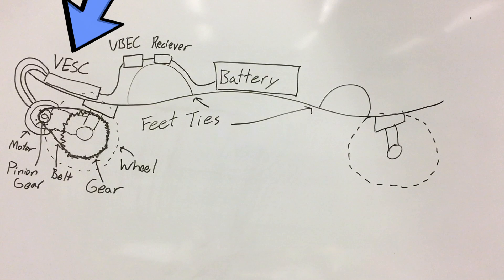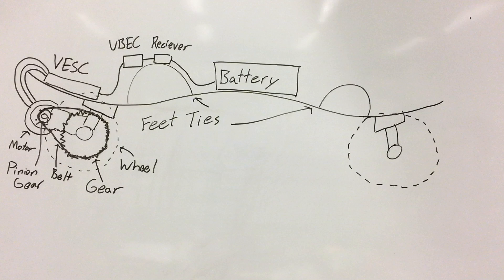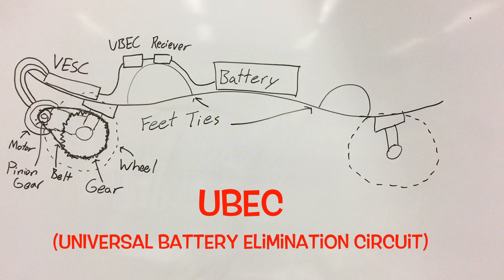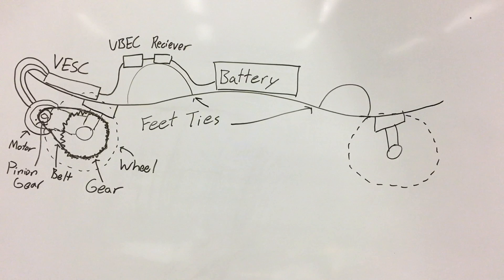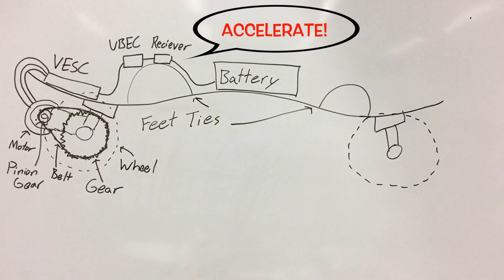Now the VESC sends information to the motor to allow it to spin. And following that, it goes into a U-BEC which powers the receiver. And the receiver is what collects information from your controller to tell the VESC